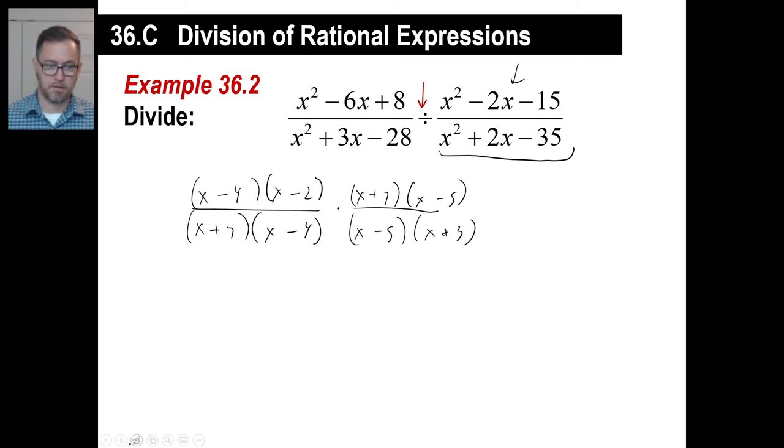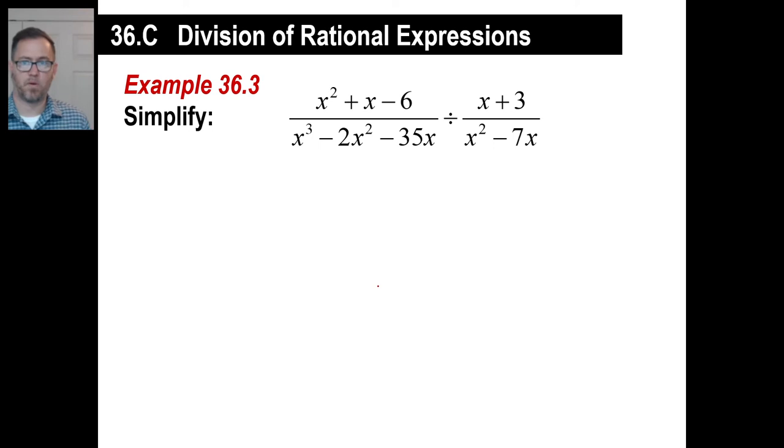And then the same thing. We just cancel out the ones we can cancel. And look at here. Gone. And what? X plus 7. Gone. X minus 5. Gone. Now, we have X minus 2 on top. X plus 3 on the bottom. All done.